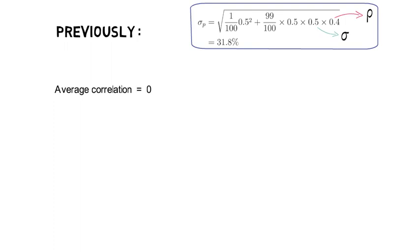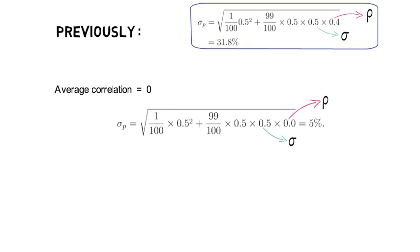In that case, the amount of systematic risk for a 100 asset equal weight portfolio would drop to 5%.